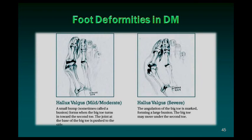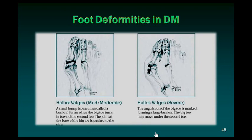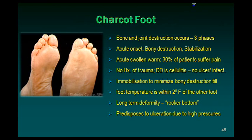The other deformities are hallux valgus, mild to moderate. You can see the valgus deformity of the hallux — a small bump, sometimes called a bunion, forms when the big toe turns inward towards the second toe, and the joint at the base of the big toe is pushed to the side. If the hallux valgus is severe, the angulation of the big toe is marked, forming a large bunion, and the big toe may move under or override the second toe.